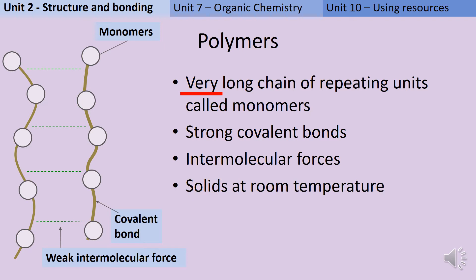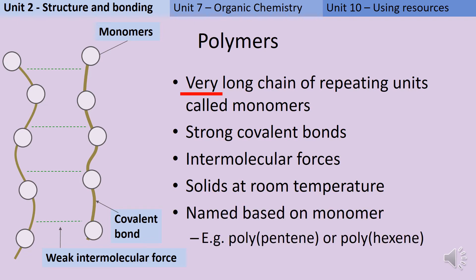In order to name a polymer, we look at the names of its monomers. So for instance, if the monomer was pentene, the polymer would be polypentene, which just means lots of pentene. Likewise, if the monomer were hexene, the polymer would be called polyhexene.